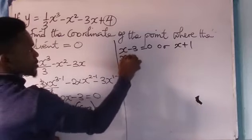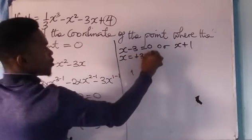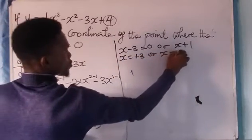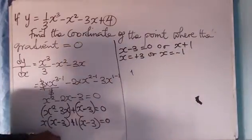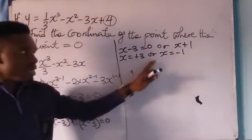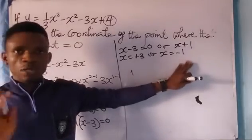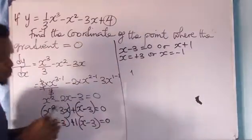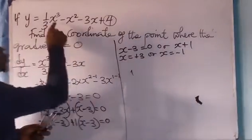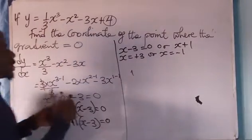Therefore, this becomes x equals plus 3, or x equals minus 1. Now that you have gotten x equals plus 3 and x equals minus 1, you are not stopping there. You are going to put your values into this original expression.